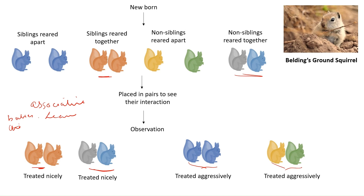One more observation was made: when siblings were reared apart they treated each other aggressively, but the aggression was less compared to when non-siblings were reared apart. This means that apart from environment, genes also play a role, which we have been learning from the last few videos.